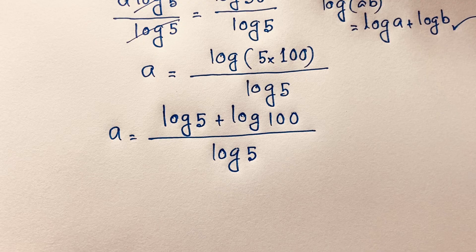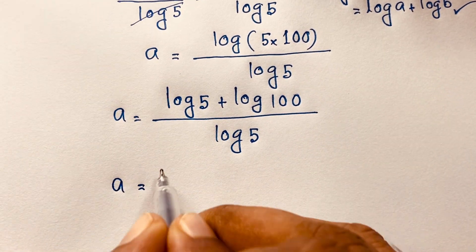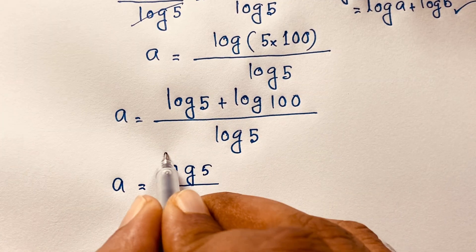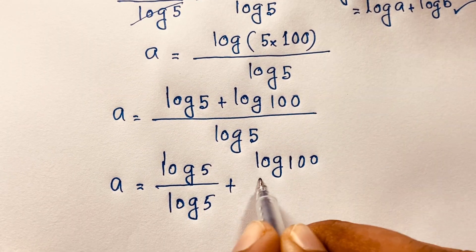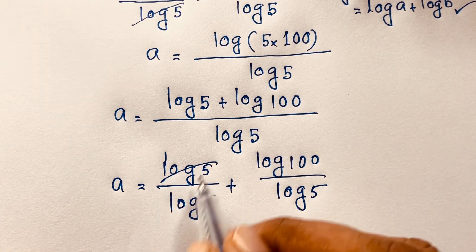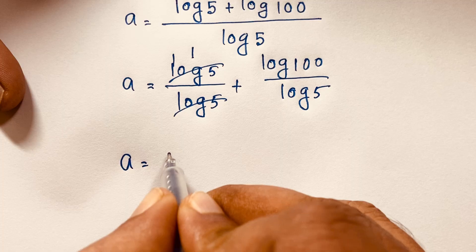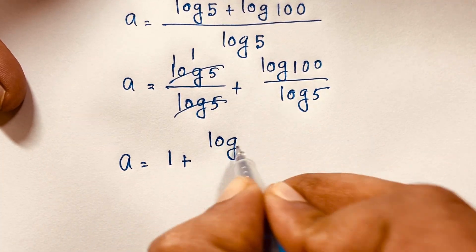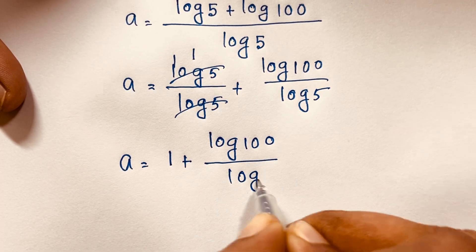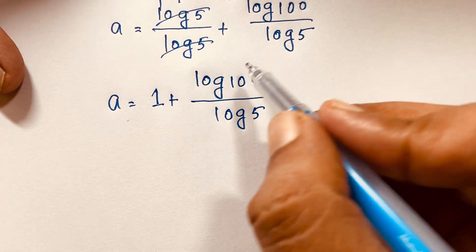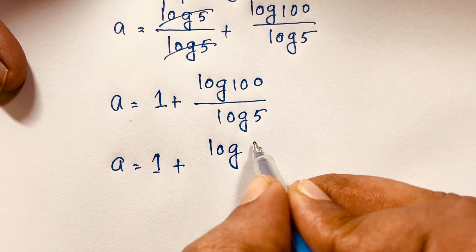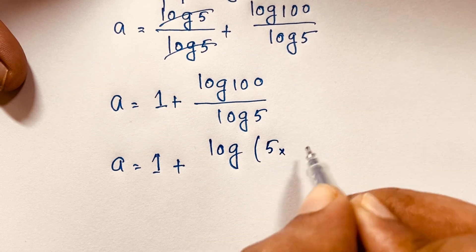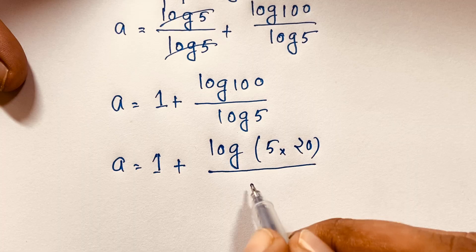I separate this fraction. It becomes a is equal to log 5 over log 5 plus log 100 over log 5. Now log 100 can be written as log(5 × 20), which is 100, over log 5.